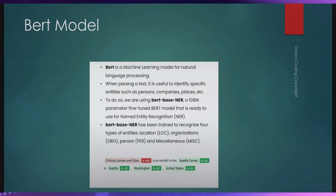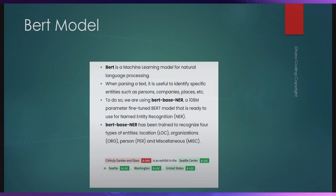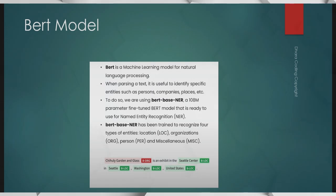In this one we are going to talk about the BERT model. BERT is used in natural language processing — it is generally used to identify in which context a sentence belongs. For example, if you give 'Microsoft' it will identify it as an organization; if you give 'Seattle' it will identify it as a location name.